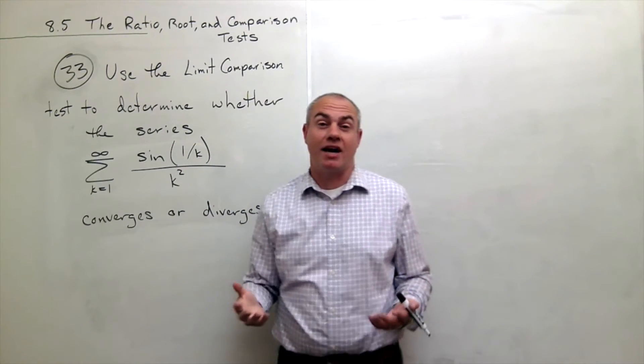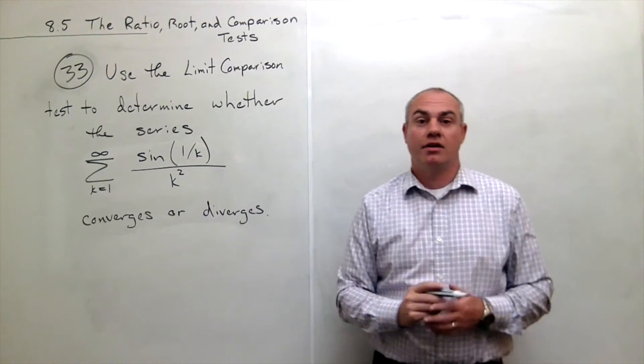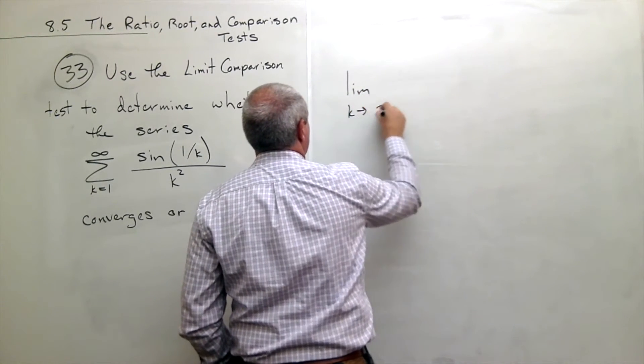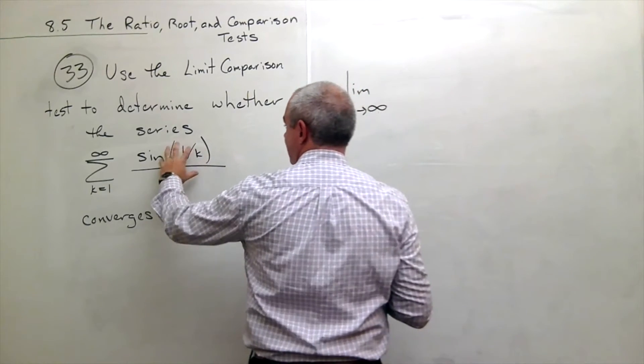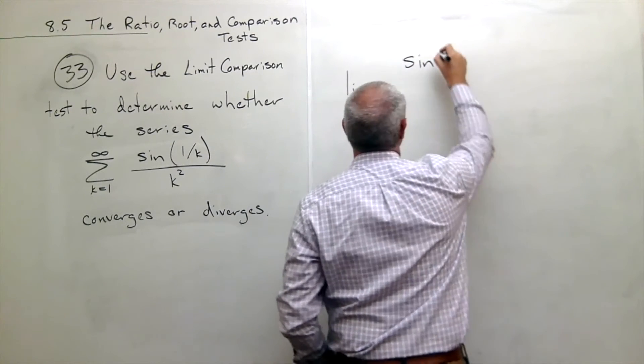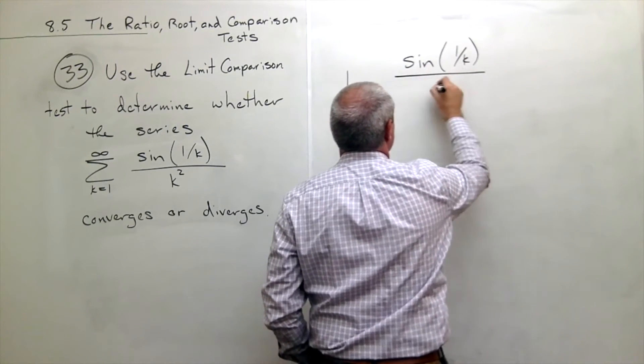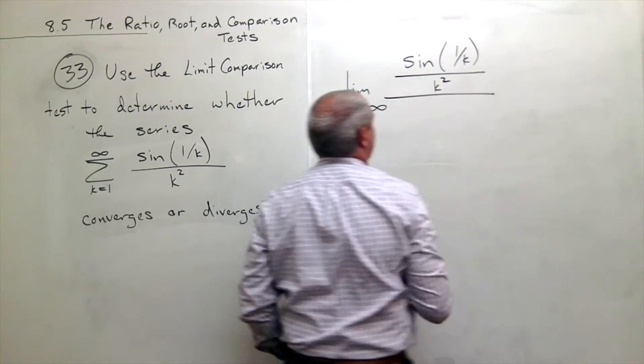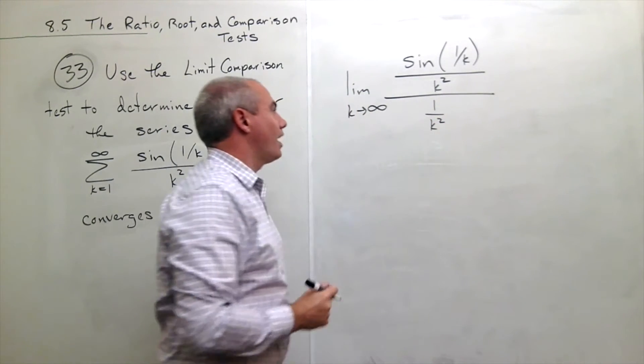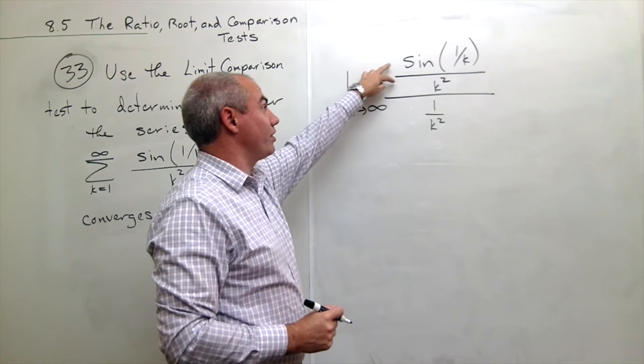So that's what I'm going to test out is, is this thing kind of like the sum of 1 over k squared? And the way I'm going to do that is I'm going to set up a limit as k goes to infinity of this guy I'll put on the top. So I get sine of 1 over k divided by k squared, and then I'm going to compare that to 1 over k squared. I know something about this sum because it's a p-series.